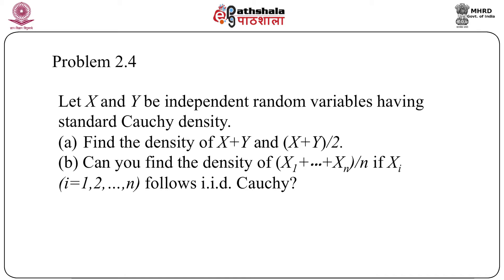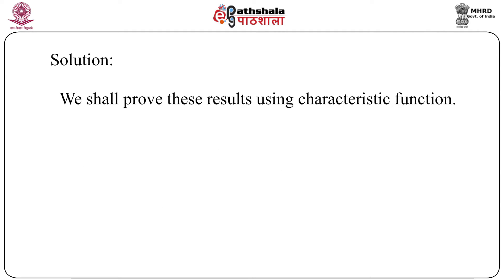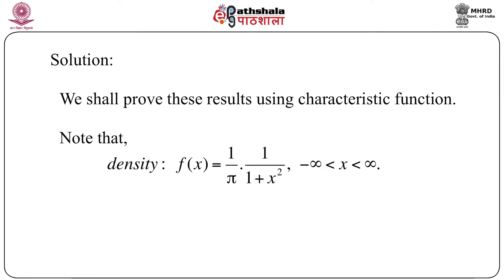One final problem: let X and Y be independent random variables having standard Cauchy density. We would like to find the density of X+Y and (X+Y)/2. If we can find the distribution of (X+Y)/2, can we find the distribution of (X_1 + X_2 + ... + X_n)/n if each X_i follows iid Cauchy? The density of the standard Cauchy distribution is f(x) = (1/π) · 1/(1+x^2), and its characteristic function is φ(t) = e^{-|t|}.